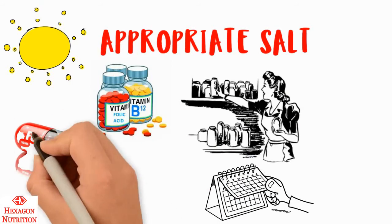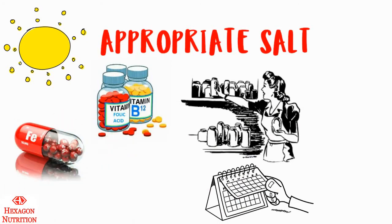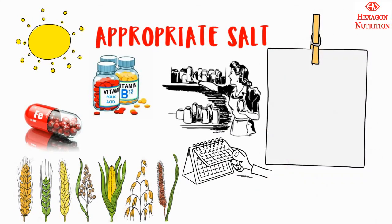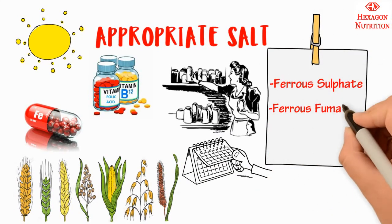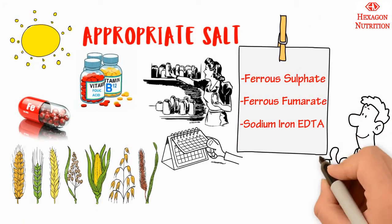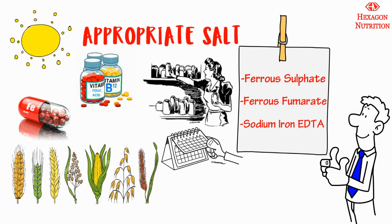Iron is one of the most commonly preferred fortifications for flour fortification. Salt forms of iron such as ferrous sulfate, ferrous fumarate, and sodium iron EDTA are commonly preferred due to their excellent stability and bioavailability.